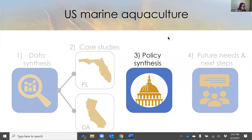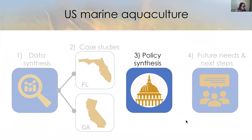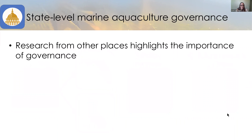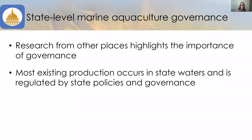Thank you, Haley. You've now heard a lot about challenges with data consistency, data access, and comprehensiveness — all challenges that accompany trying to do a complete accounting of mariculture output, whether that be sales value, production volume, or other important metrics. Now I want to pivot to a somewhat similar gap: our lack of a comprehensive accounting of mariculture policy in the United States. We know from research in other parts of the world that effective governance can be really critical for supporting the development of new industries and supporting the productive output of existing industries, mariculture included.